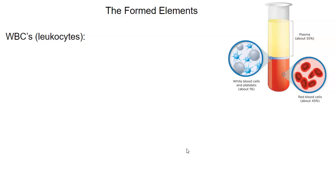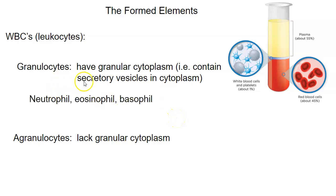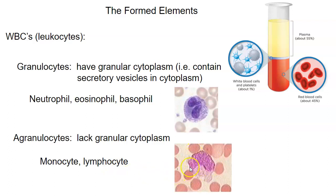White blood cells are called leukocytes. There are two main kinds: granulocytes and agranulocytes. Granulocytes have granular cytoplasmic inclusions — secretory vesicles, just like we saw with the mast cell. The neutrophil, eosinophil, and basophil are the three leukocytes considered granulocytes. The dark purple is the nucleus, and the purple little dots are the granules — stuff that can be secreted from the cell, like heparin and other enzymes. The agranulocytes, the monocyte and lymphocyte, do not have those granules in the cytoplasm.